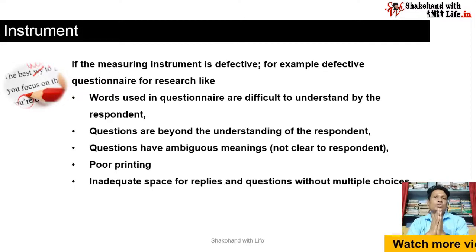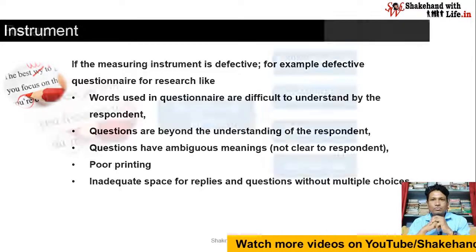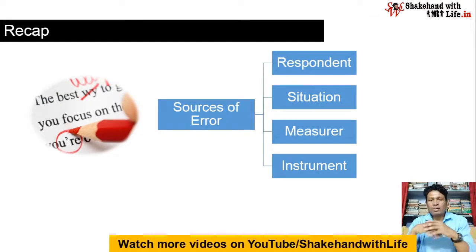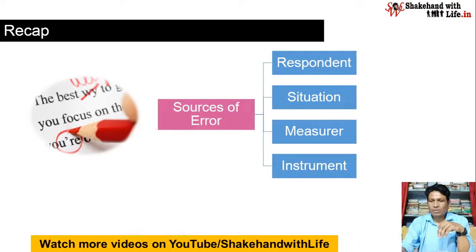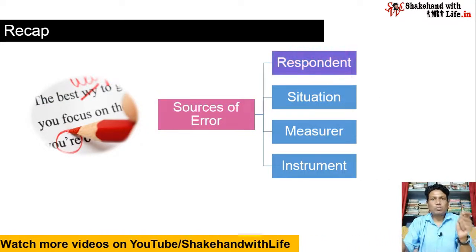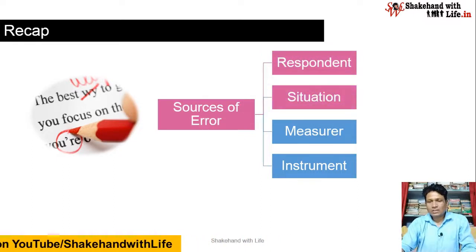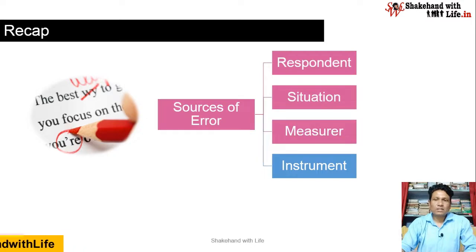So these were the four sources of error in measurement. As a recap: the first one is Respondent, the second one is Situation, the third one is Measurer, and the fourth one is Instrument.